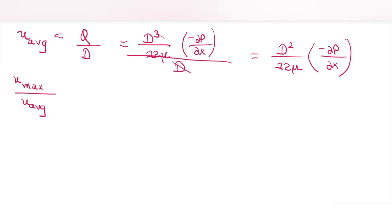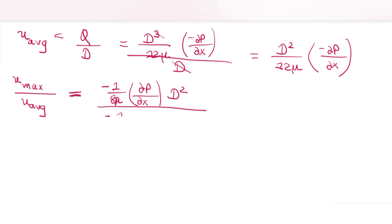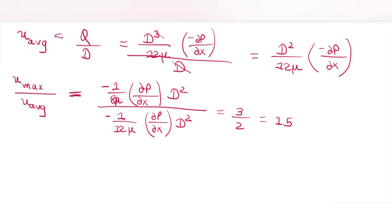The ratio of maximum velocity to average velocity is U_max/U_avg = [−(1/8μ)(∂P/∂x)D²] / [−(1/12μ)(∂P/∂x)D²] = 12/8 = 3/2 = 1.5. Remember that U_max/U_avg = 1.5.